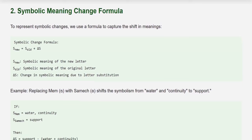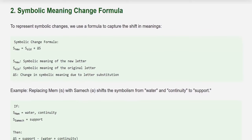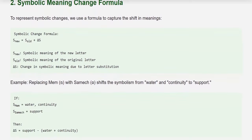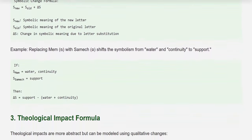2. Symbolic Meaning Change Formula: To represent symbolic changes, we use: S_new = S_old + ΔS, where S_new is the symbolic meaning of the new letter, S_old is the symbolic meaning of the original letter, and ΔS is the change in symbolic meaning due to letter substitution. Example: Replacing Mem with Samek shifts the symbolism from water and continuity to support: S_Mem = water/continuity, S_Samek = support, so ΔS = support − (water + continuity).